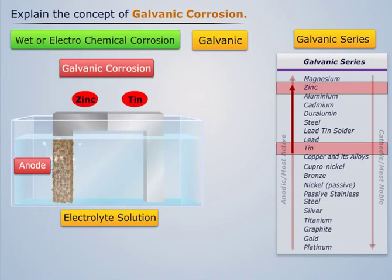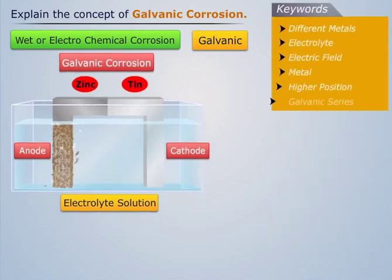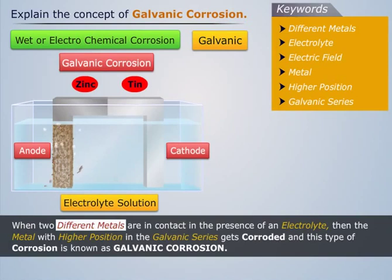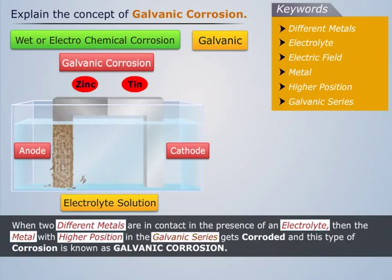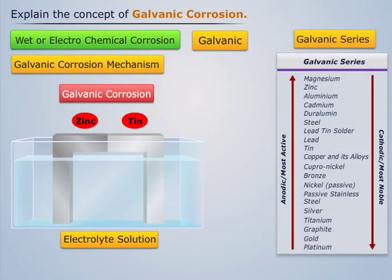Here, zinc forms the anode and is attacked and slowly gets dissolved, whereas tin acts as the cathode. Thus, when two different metals are in contact in the presence of an electrolyte, the metal with the higher position in the galvanic series gets corroded, and this type of corrosion is known as galvanic corrosion.